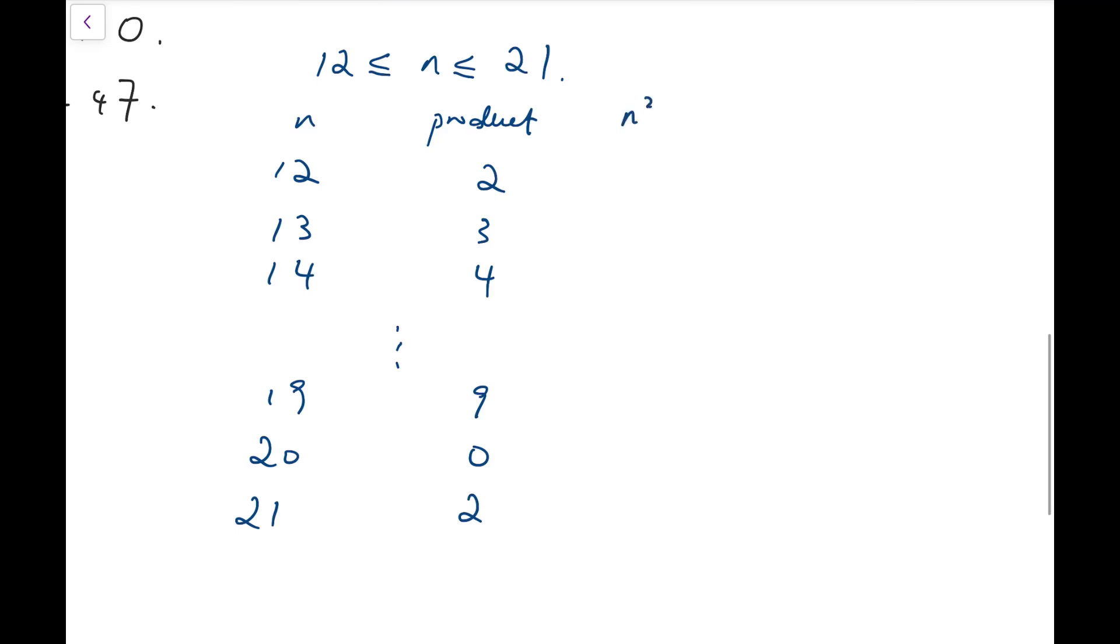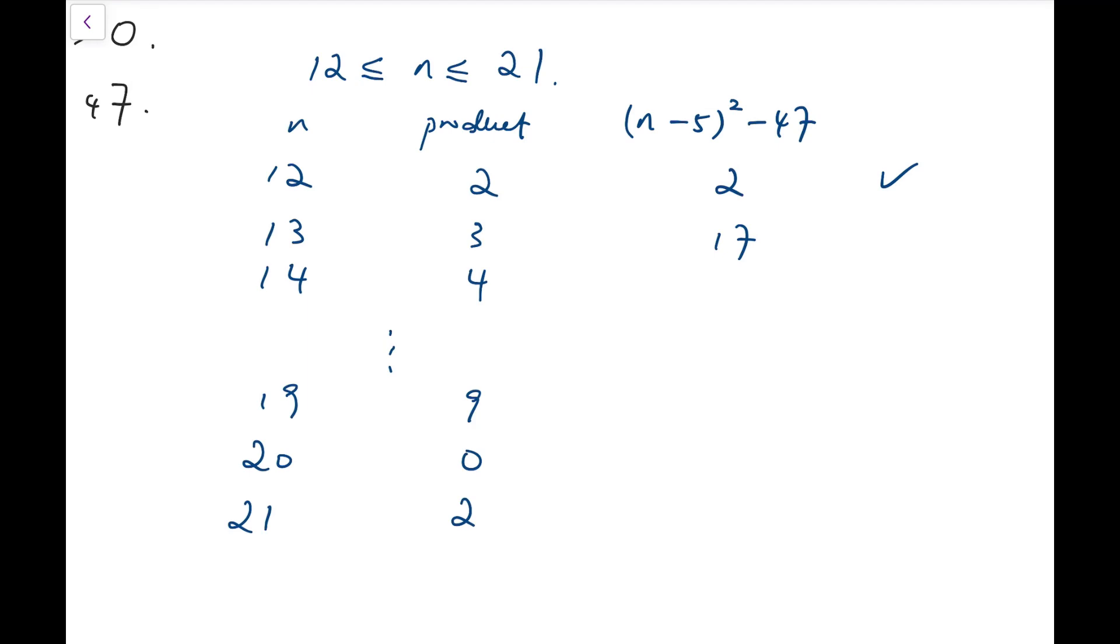It remains to calculate n squared minus 10n minus 22. I can rewrite this as n minus 5 whole squared minus 47. When n is 12, so it's 7 squared minus 47, that's 2. This is the answer. And then when n is 13, it's 64, because it's 8 squared, 64 minus 47, so that's 17. Actually I do not have to check 14 to 19, because this number just keeps increasing. So it's larger than 10, so not possible. And for 20, it's actually still increasing. So I can further extend this to numbers up to 21. So that means the only answer is 12.